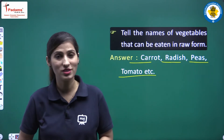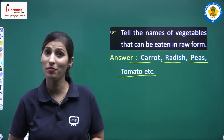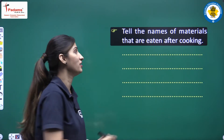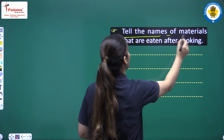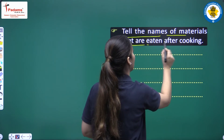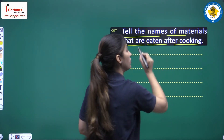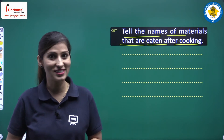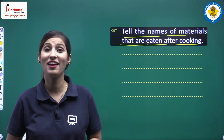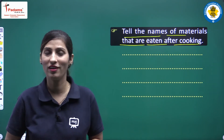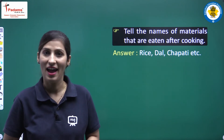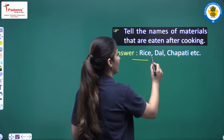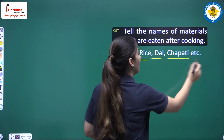These are the foodstuffs that we can eat in raw form. Our next question is: tell the names of materials that are eaten after cooking. Here we have to name things that we eat after cooking. The examples are rice, dal, chapati, etc.